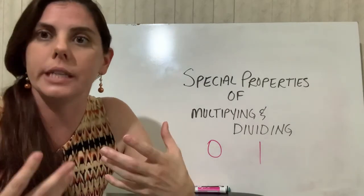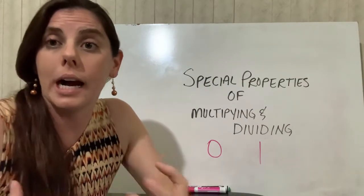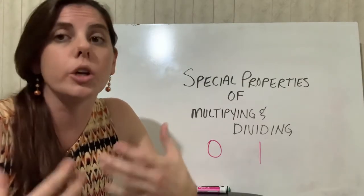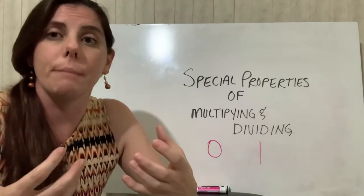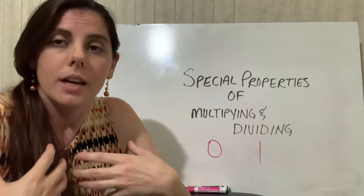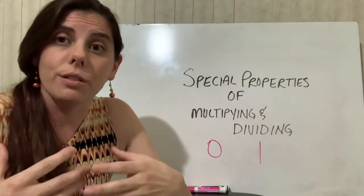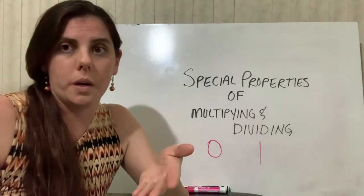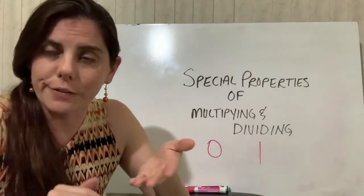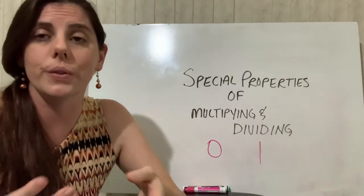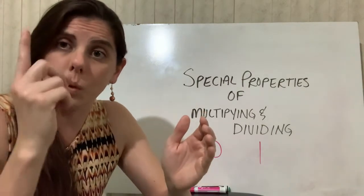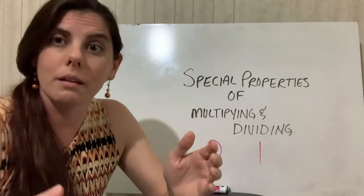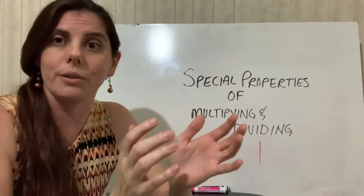So if I'm starting off with the number 13, 13 times 1 is still going to equal 13. So 13 doesn't change. 13 maintains its identity. Same thing with division. If I have 13 divided by 1, it's still going to equal 13. You're saying I have 13 things and I want to make it into one group. So how many am I going to have in one group? Well, I'm going to have 13.